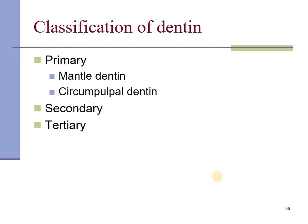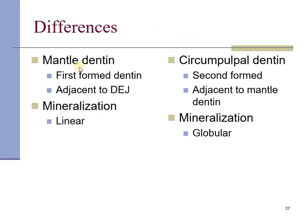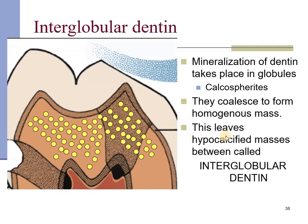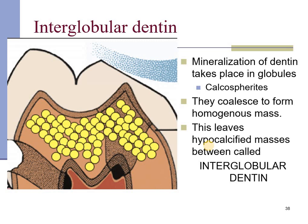Reviewing the classification: mantle dentine is the first-formed dentine, found adjacent to the dentino-enamel junction, and shows linear mineralization. Circumpulpal dentine is second-formed and shows globular mineralization. There are multiple globules of minerals or initiation points called calcospherites. As these globules enlarge, they leave some spaces which are hypomineralized — these are called interglobular dentine.